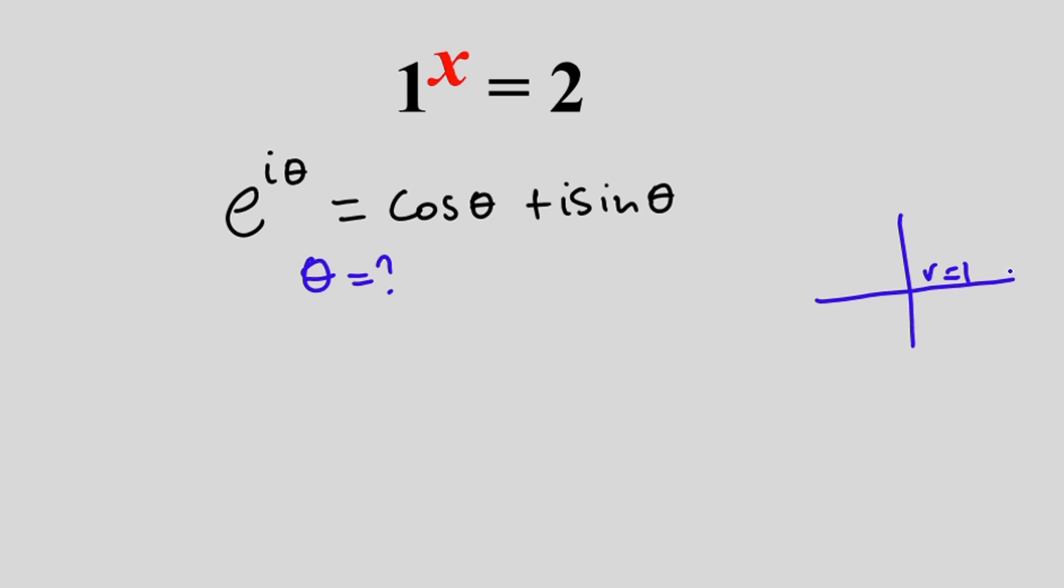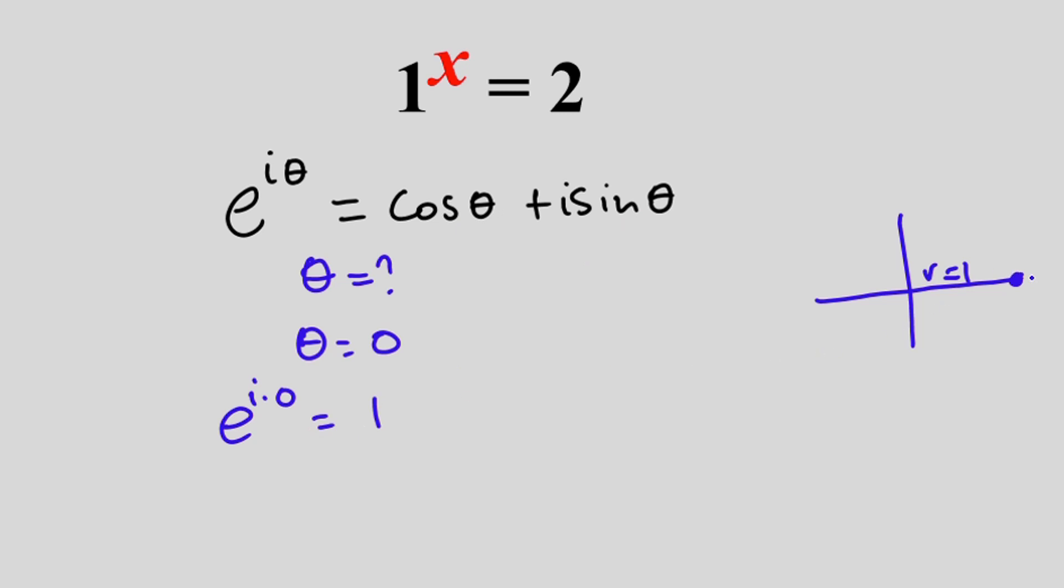So when theta is equal to 0, we are going to have e to the power i times 0, which is equal to cos 0 is simply 1, then plus sin 0 is 0. So this one will be equal to 1. Now, from here, when theta is equal to 0, we know we have this equation here.